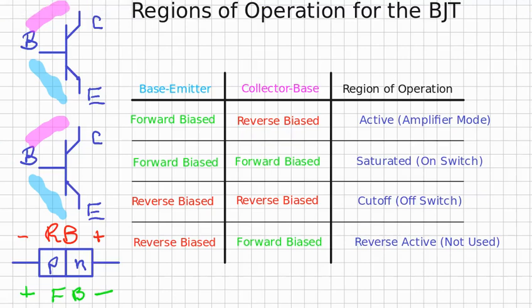Let's look at the regions of operation of the bipolar junction transistor, or BJT. They are determined for both PNP and NPN transistors by the bias states of the base-emitter and collector-base junctions. Notice the base-emitter junctions are called out in light blue and the collector-base junctions are called out in light purple.